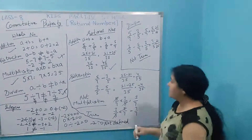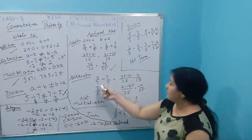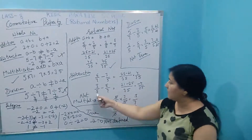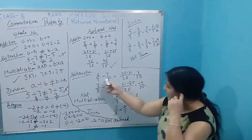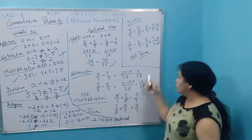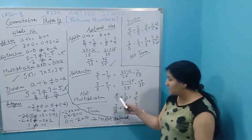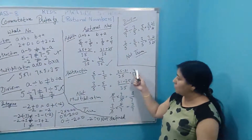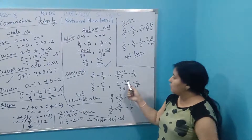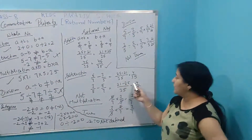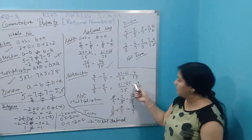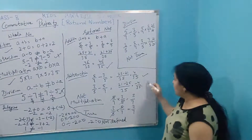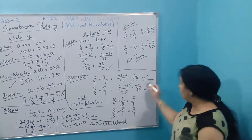For subtraction of rational numbers: 5 by 7 minus 3 by 5. Using LCM of 35: this gives 25 minus 21, which is 4 by 35. In the other order, 3 by 5 minus 5 by 7 gives 21 minus 25, which is minus 4 by 35. Four by 35 and minus 4 by 35 are not equal.